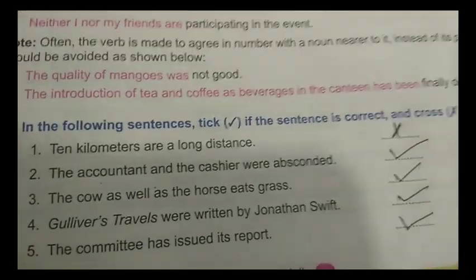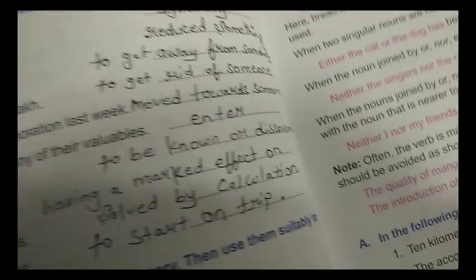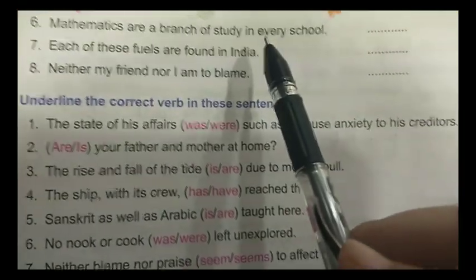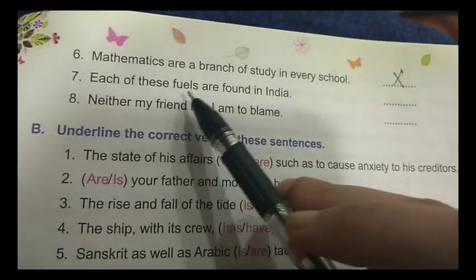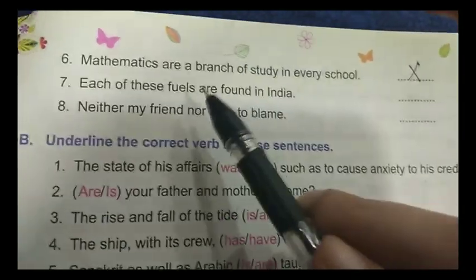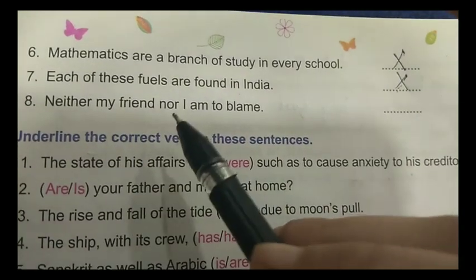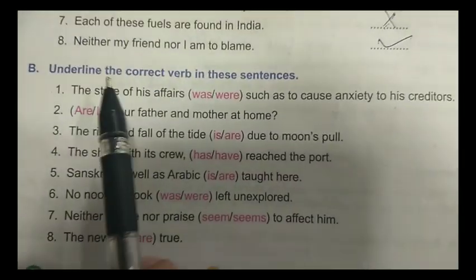Now come to page number 56 for the next one. 'Mathematics are a branch of study in every school' — the wrong use of 'are' is here, so put a cross. 'Each of these fuels are found in India' — 'each' has no plural, so put a cross. 'Neither my friend nor I am to blame' — this is a correct sentence, tick.